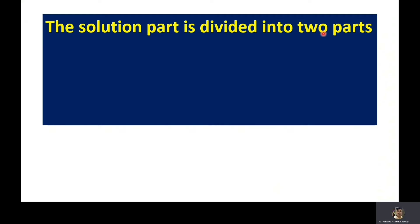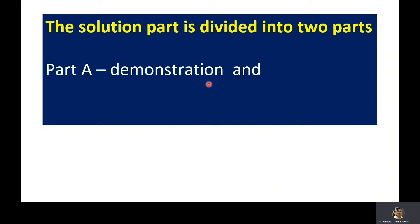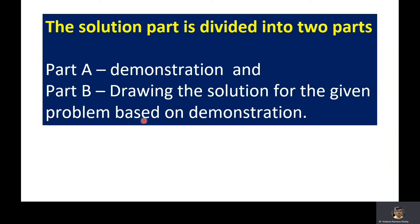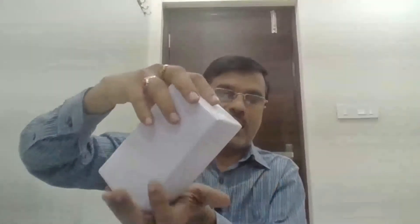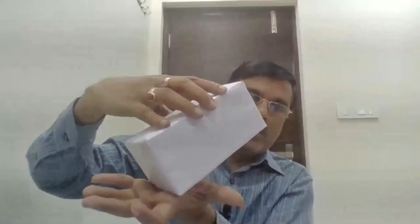The solution is divided into two parts: Part A — demonstration, and Part B — drawing the solution for the given problem based on the demonstration. The square prism has two bases and four faces; the base shape is square and the face shape is rectangular. The axis, which is the line joining the two centers of the bases, is making an angle of 45 degrees to HP, and the base on HP is making an angle of 30 degrees to VP.